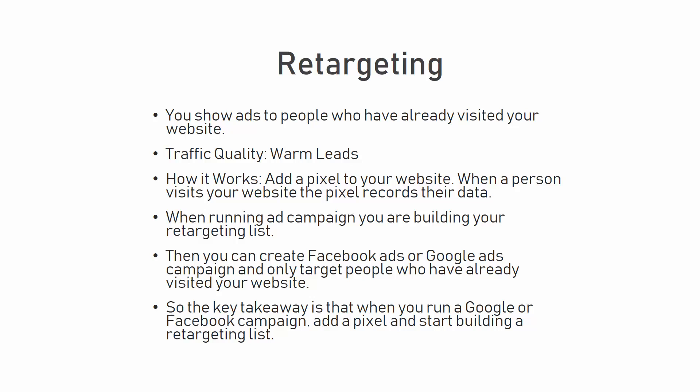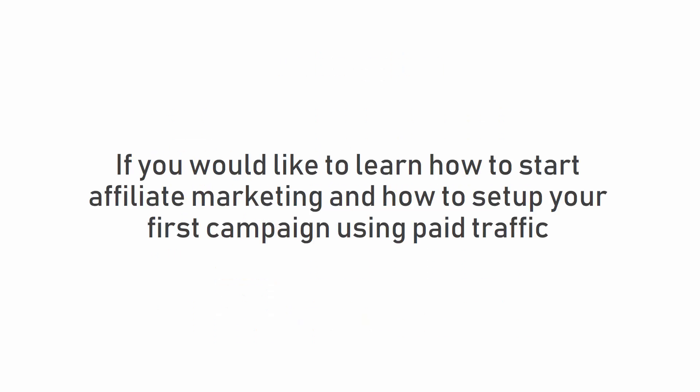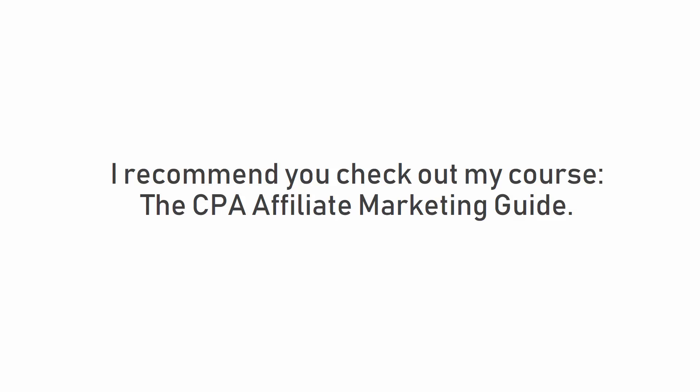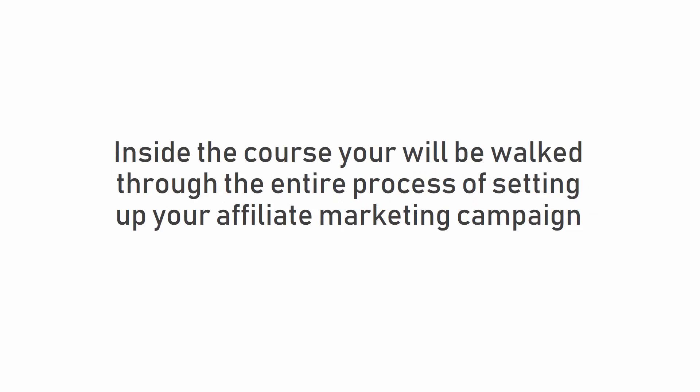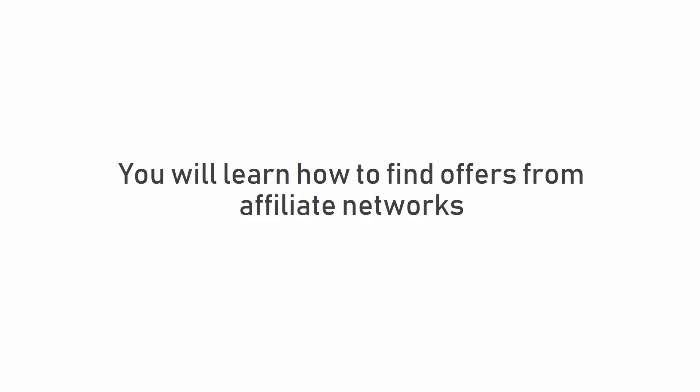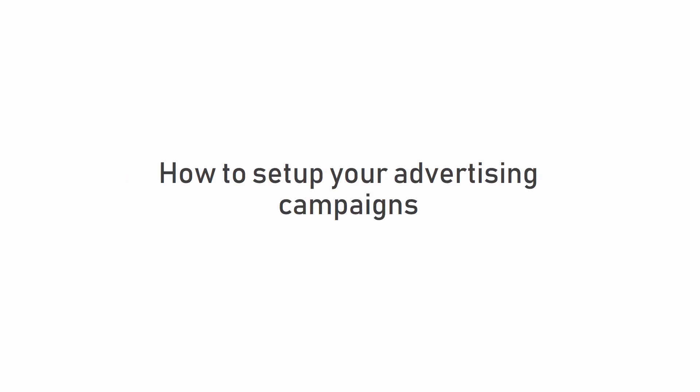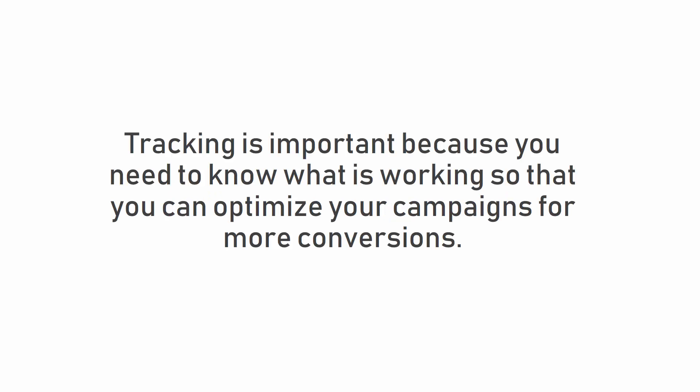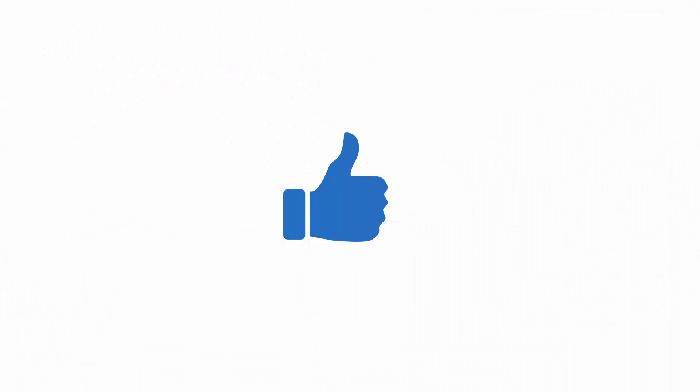So we have just covered the main free and paid traffic sources you can use for your affiliate offers. If you would like to learn how to start affiliate marketing and how to set up your first campaign using paid traffic, then I recommend you check out my course, the CPA Affiliate Marketing Guide. Inside this course you will be walked through the entire process of setting up your affiliate marketing campaign — you will learn how to find offers from affiliate networks, how to set up your advertising campaigns, and how to track your results, because tracking is important. If you liked this video, hit the thumbs up, feel free to comment, and make sure you subscribe to my channel so that you never miss an upload. Thank you for watching.